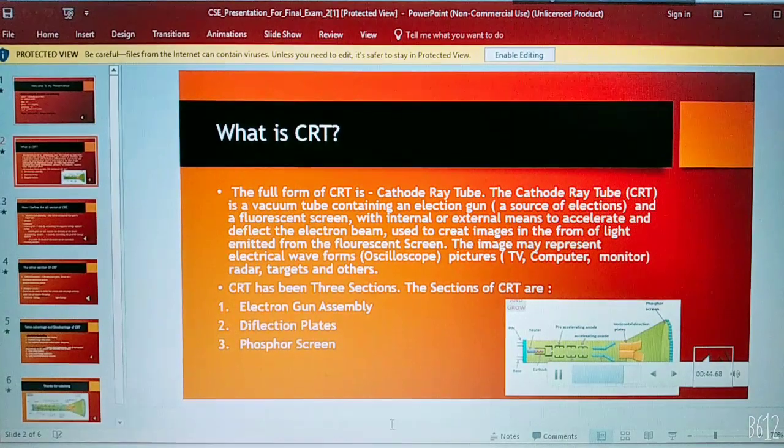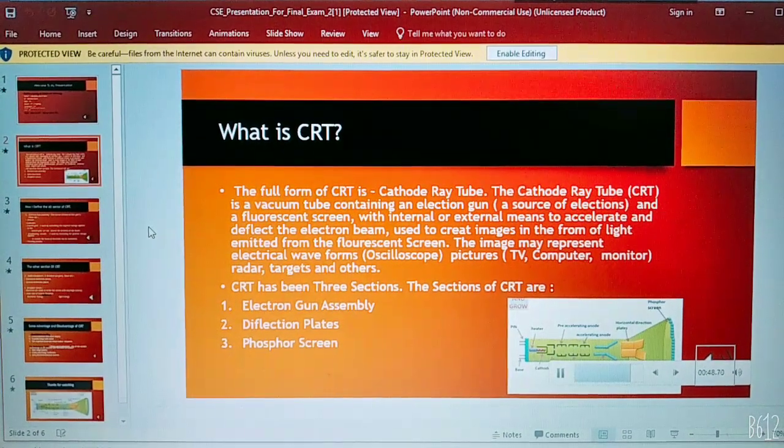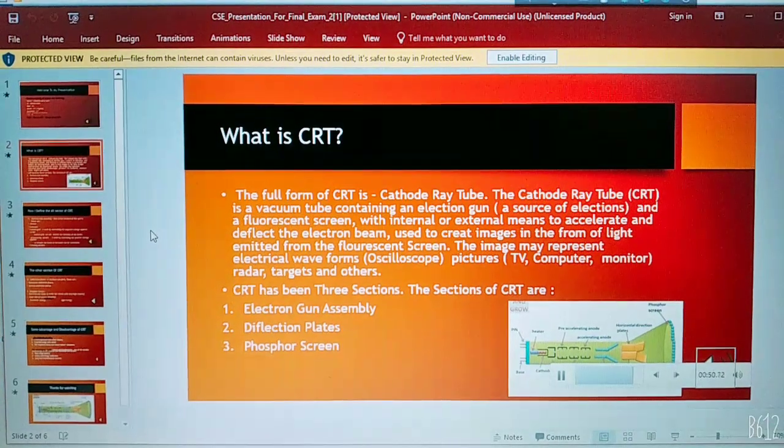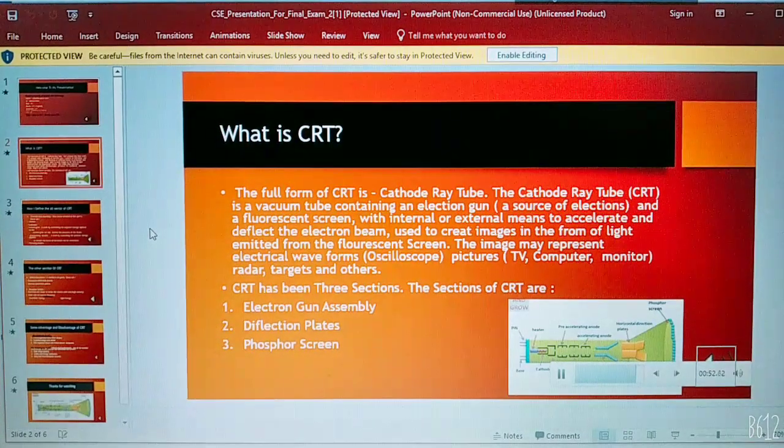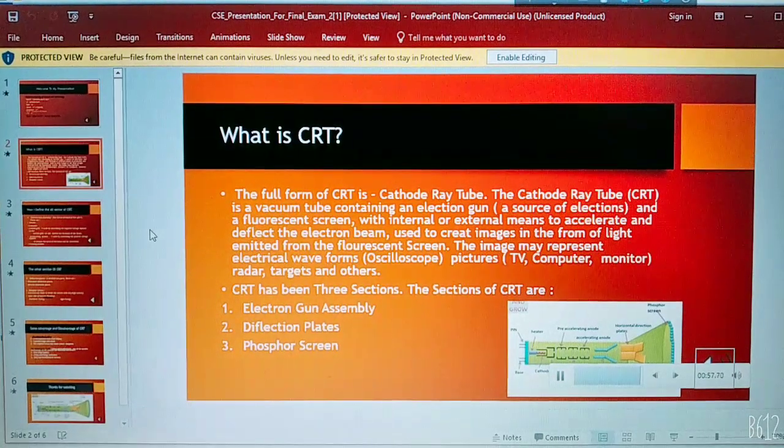CRT has three sections. The sections of CRT are: first one is electron gun assembly, second one deflection plates, and the last one is phosphor screen.